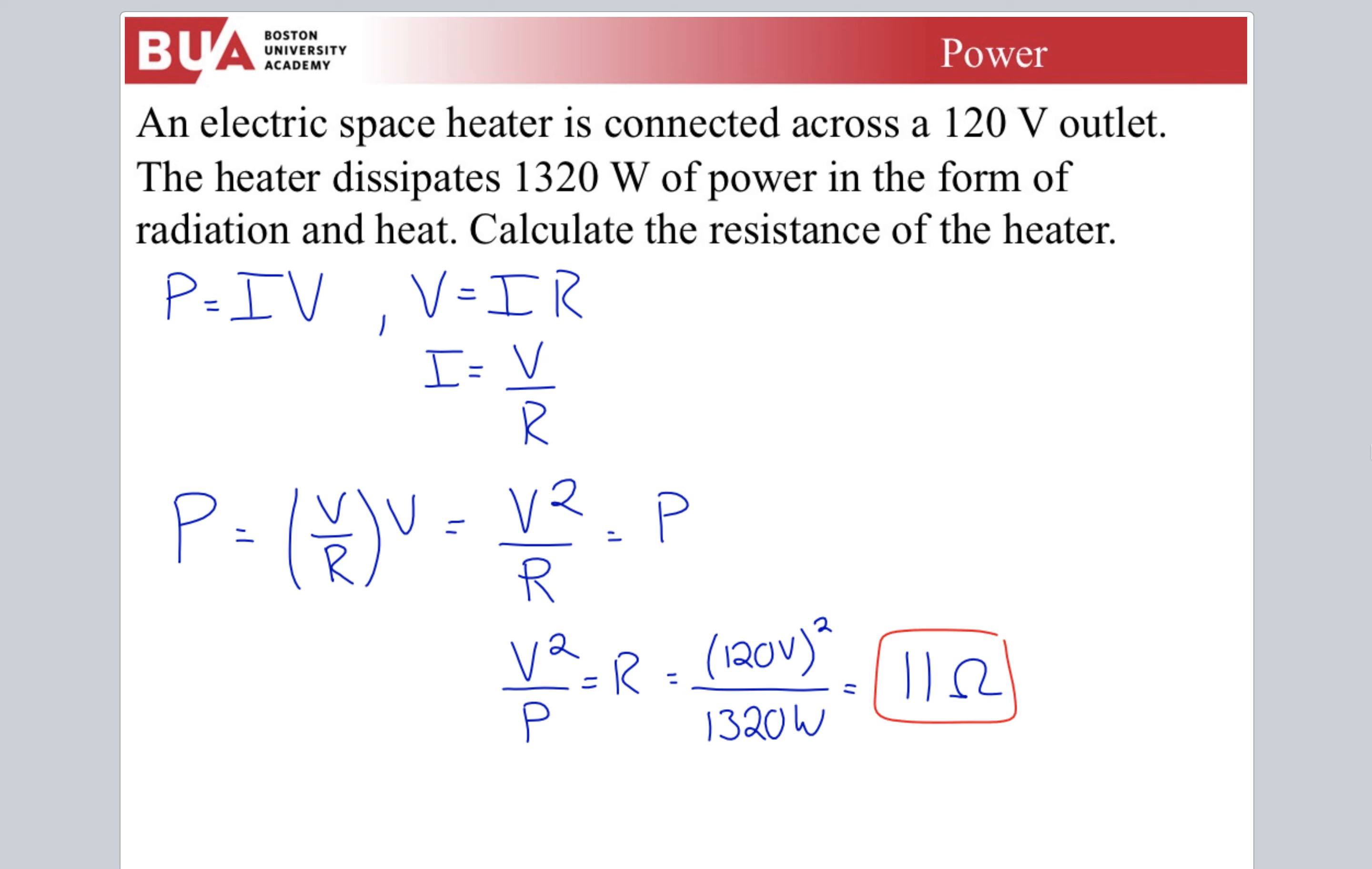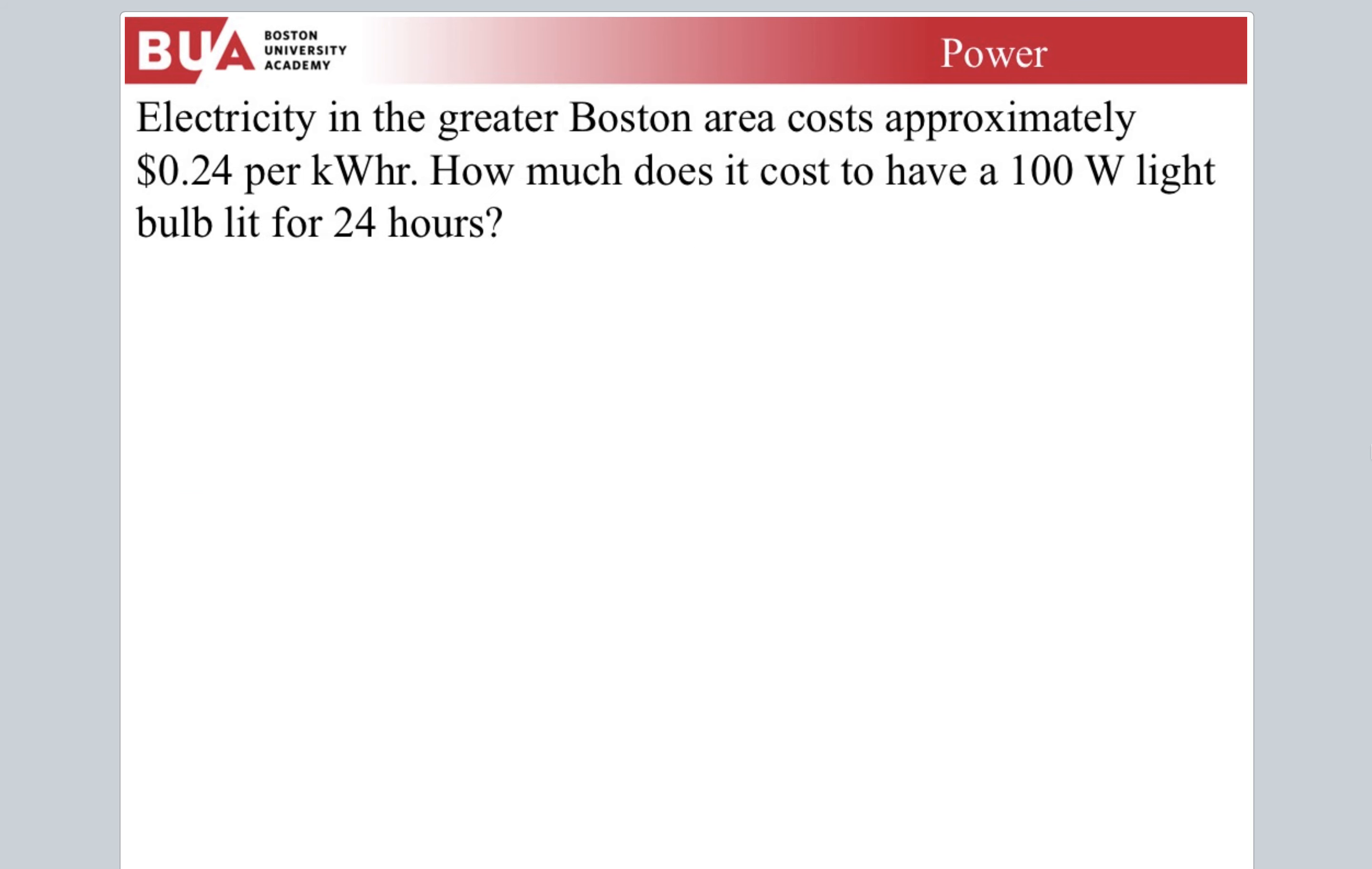1320 watts gives us a resistance of about 11 ohms. These are realistic numbers. 11 ohms is a very low resistance. Some of you probably have electric space heaters. If you have a house like mine, it's pretty old. The radiators, water heated radiators aren't enough. You plug something in, in the dead of winter.